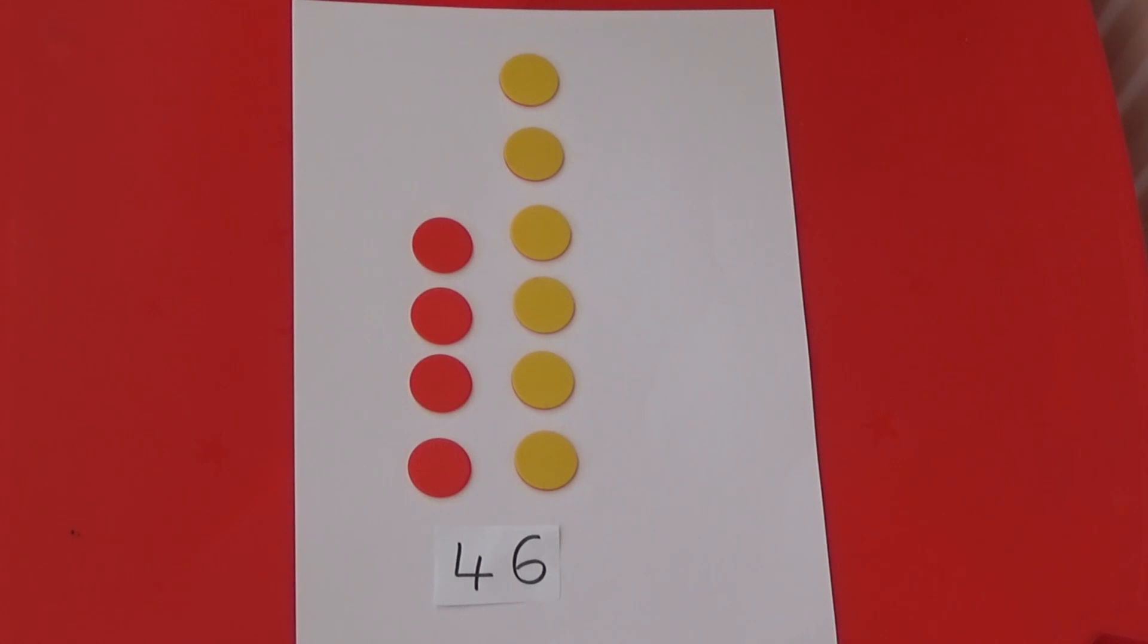I can use these to represent any two digit number. If I am making the number forty-six I need four tens and six ones. So I have put down four red counters to represent forty and six yellow counters to represent six.